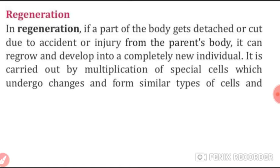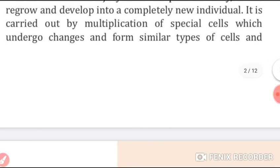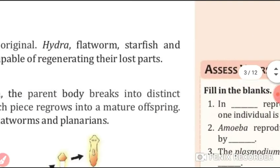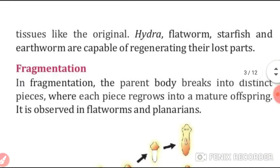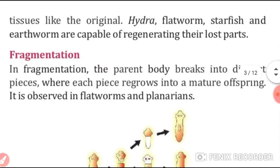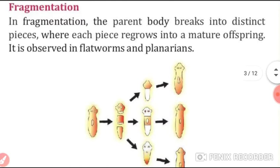Now, regeneration. In regeneration, if a part of the body gets detached or cut due to accident or injury from the parent's body, it can regrow and develop into a completely new individual. It is carried out by the multiplication of special cells which undergo changes and form similar types of cells and tissues. Hydra, flatworm, starfish, and earthworm are all capable of regenerating their lost parts.